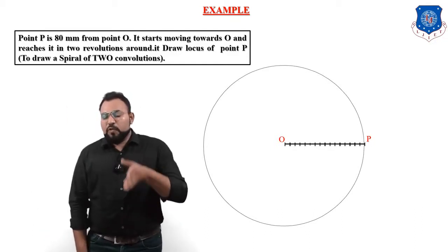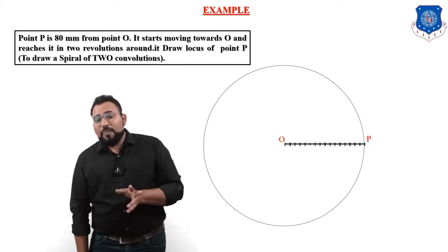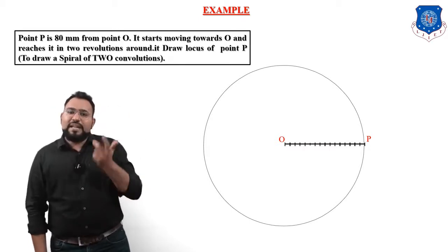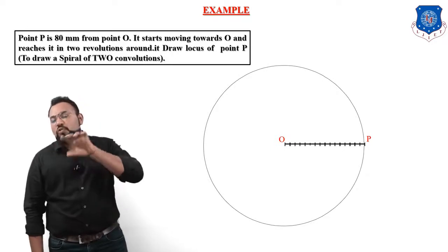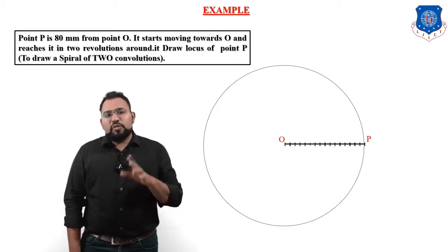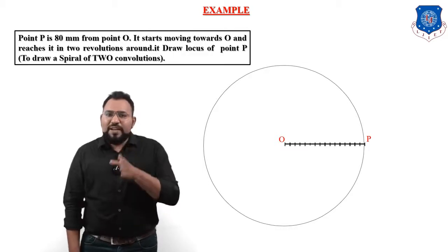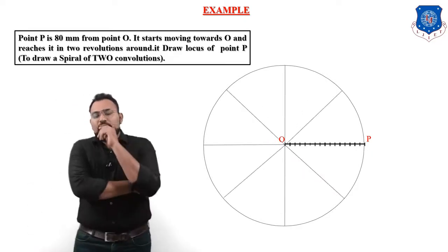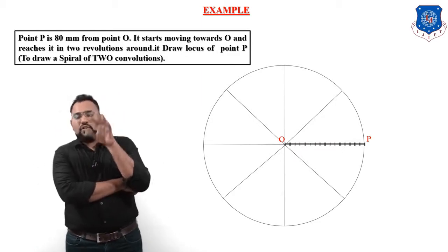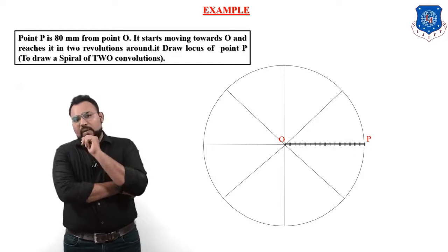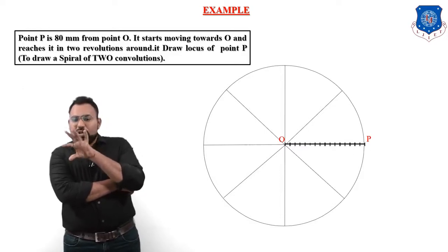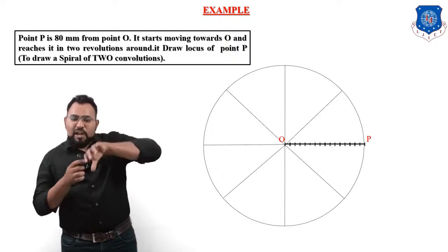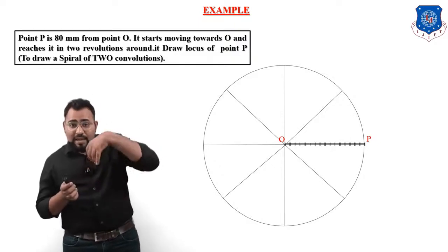Now we need to divide this circle into parts. For one revolution we divide into eight parts; for two revolutions we divide into eight multiplied by two, which is 16 parts. But to divide into 16 parts, we first divide the circle into eight equal parts. The question arises: we said 16 divisions but are only making eight — how do we get 16 divisions of the circle?